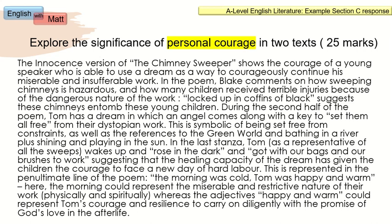If you have more time, consider writing another paragraph on Blake or the Kite Runner. But if three paragraphs is what you can realistically do in an hour, that's absolutely fine — you've spoken about both texts and addressed the theme of courage with a clear reference to the question. So that is an example of a Section C, Paper 2 response for political and social protest using the Kite Runner and Blake. Thank you very much for watching and good luck in your studies and the final exams.